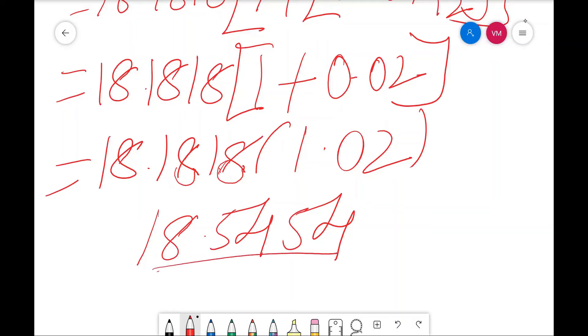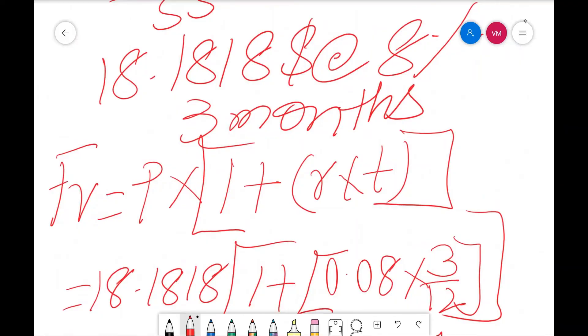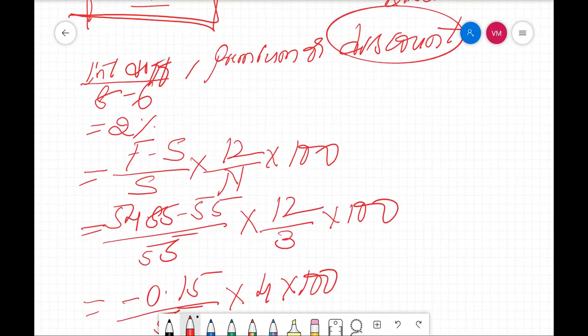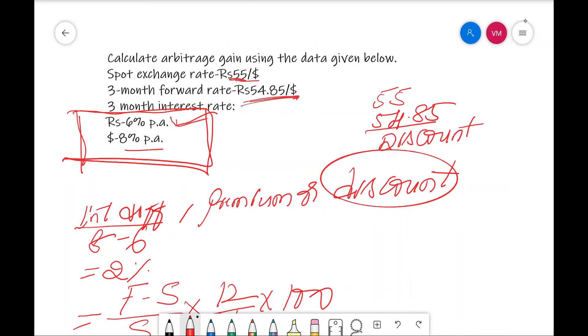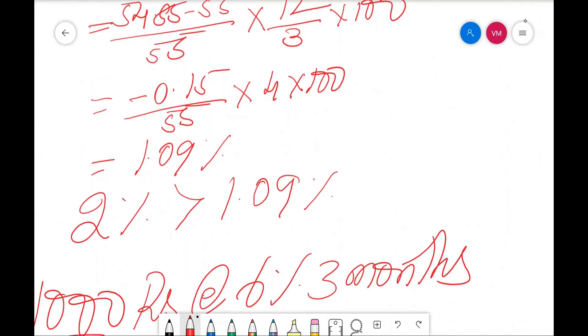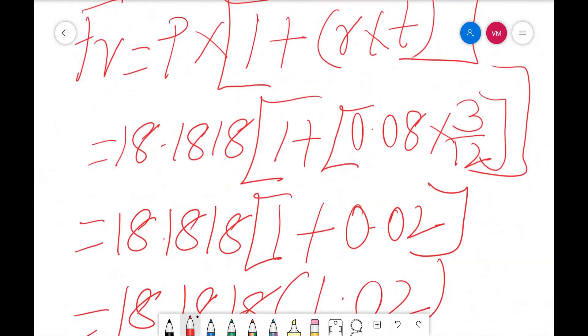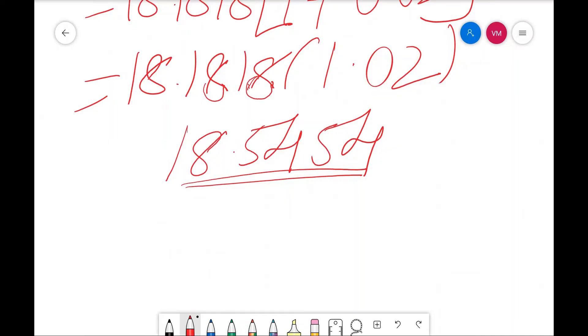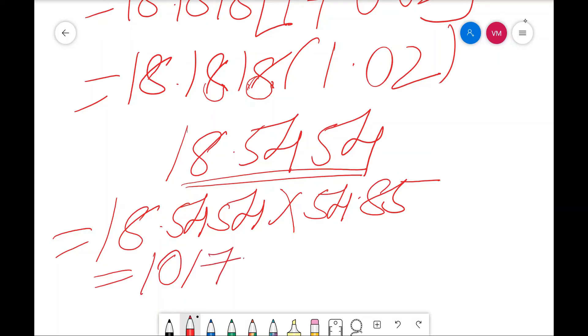This 18.5454 dollars, you are going to get after 3 months. Sell this 18.5454 dollars. At that time, what is the price per dollar? Price per dollar is 54.85 rupees. That means for 18.5454 dollars, how much rupees? That is 18.5454 multiplied by 54.85. That is 1017.22 rupees you are going to get.